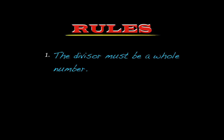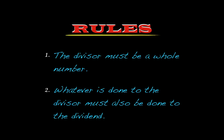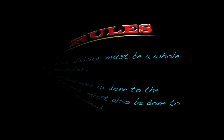So if you have one, you're going to have to change that into a whole number. And the second rule is that whatever you do to that divisor to change it into a whole number, you're going to have to do the same exact thing to the dividend. And the reason for that is that we want to keep the relationship between those two numbers the same.